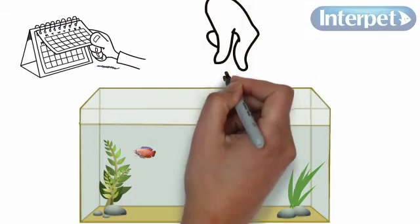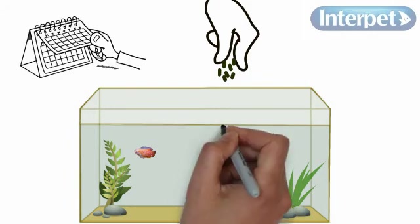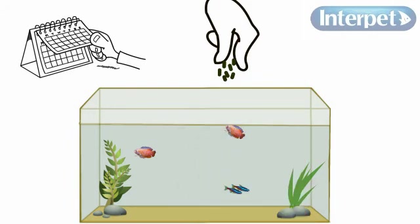Feed your fish only little amounts in the early days and make sure that they eat what you put in. If they don't, then you should scoop out the excess with a fishnet.